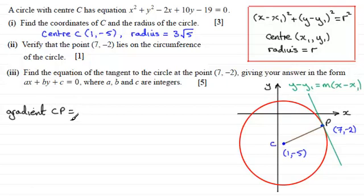And to work out the gradient, it's going to be the difference in the y-coordinates divided by the difference in the x-coordinates. I'm going to start with the minus 2 here. So it's minus 2 minus the minus 5 here.